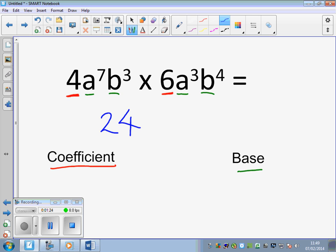However, we then look at the bases with indices. We have A to the power of 7 and A to the power of 3. We add indices on the same base. The base does not change. The base is A, but we have A to the power of 10.